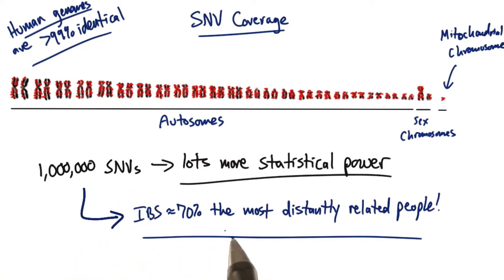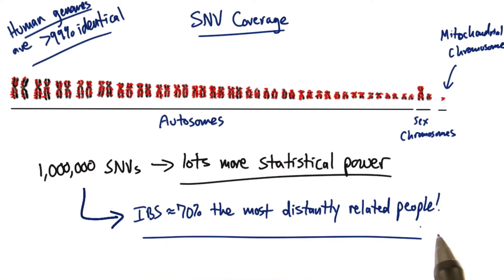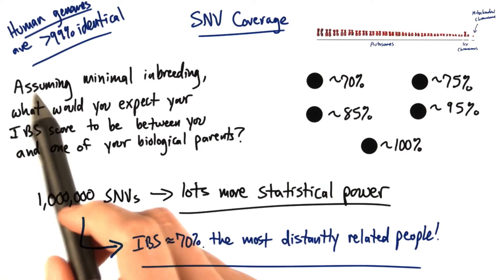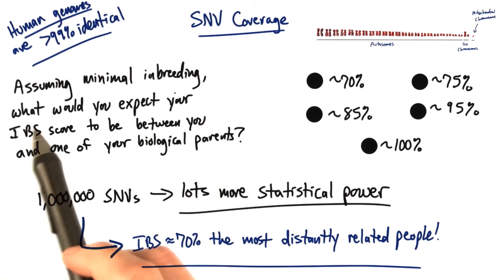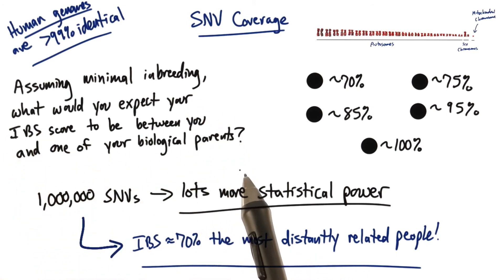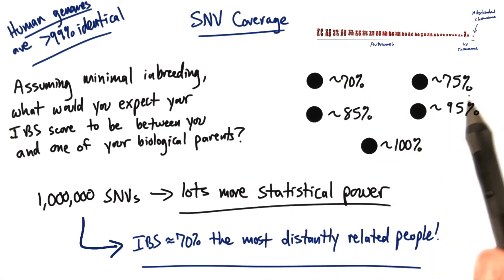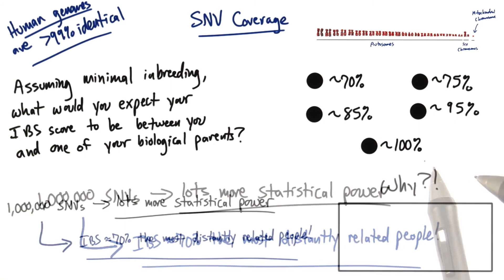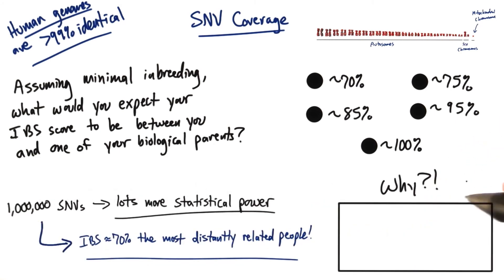The IBS score between you and most humans will be about 70% or higher. So if the background IBS score for you and the most distantly related person is about 70%, assuming minimal inbreeding, what would you expect your IBS score to be between you and one of your biological parents? About 70%, 75%, 85%, 95%, or 100%? Pick the answer you think is best and tell me why in the text box here.